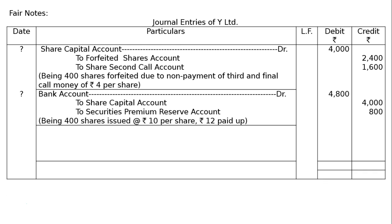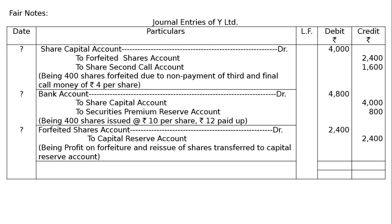The third entry: Forfeited Shares Account debited, to Capital Reserve Account. We forfeited rupees 2400 from Mr. B and allowed no discount on reissue, so there is no debit to the Forfeited Shares Account — rupees 0 deducted. The profit is rupees 2400; since we reissued the shares at a premium, the entire rupees 2400 forfeited from Mr. B on his 400 shares is transferred to Capital Reserve Account. The narration reads: profit on forfeiture and reissue of shares transferred to capital reserve account. The total of both debit and credit columns is rupees 11,200. This is the final answer.